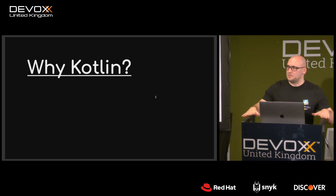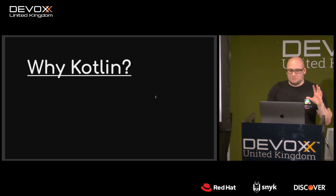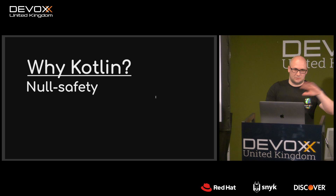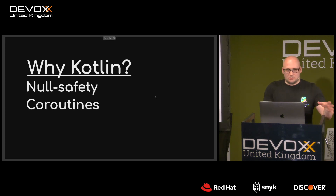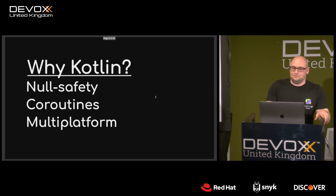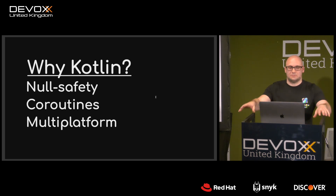This is not my opinion — this is the opinion of people I talked to. The arguments converge around four main features of Kotlin. Null safety — that's my personal favorite. Coroutines: those who need concurrency see the value in them; if you don't need concurrency, you probably don't care. Multi-platform is currently a huge focus for Kotlin, targeting different platforms.